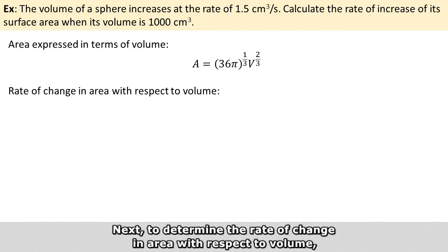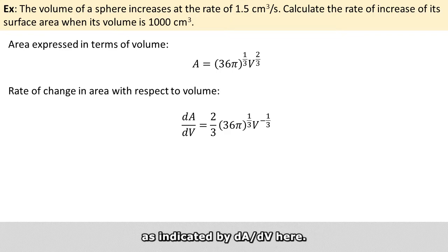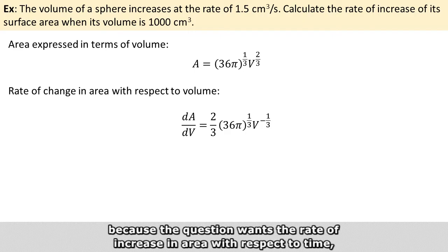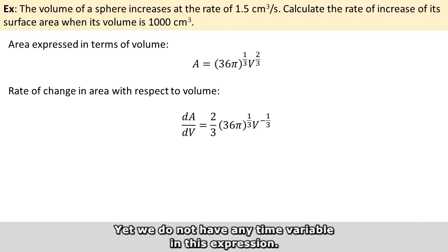Next, to determine the rate of change in area with respect to volume, we need to take the first derivative of A with respect to V, as indicated by dA/dV. However, we are still not done, because the question asks for the rate of increasing area with respect to time — that is, dA/dT — and we do not have any time variable in this expression.